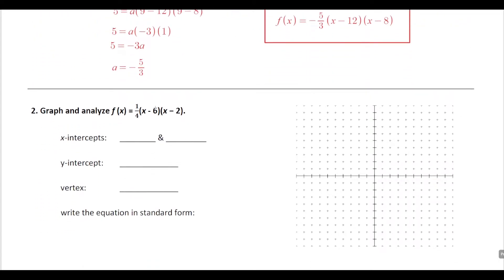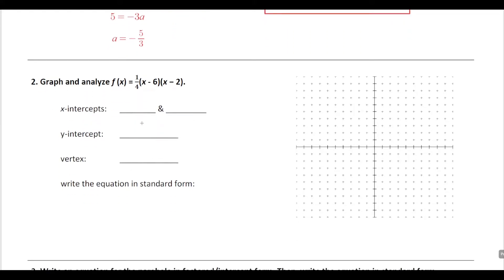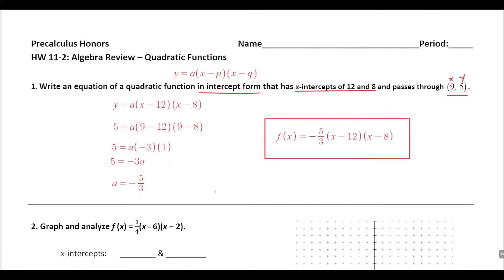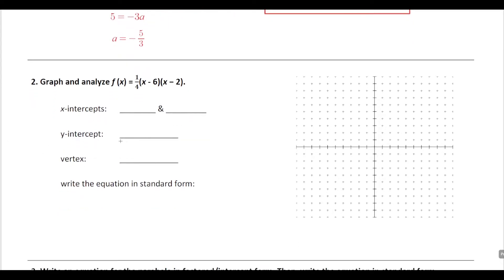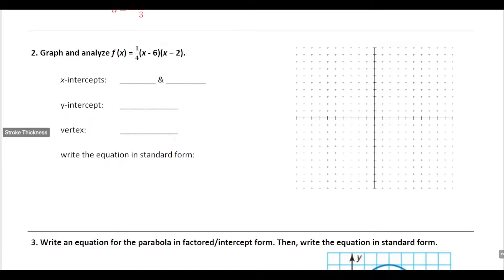Number 2 — you're given a function in intercept form from number 1. Just recall that these two numbers are going to be the x-intercepts, so 6 and 2 are the x-intercepts. Let's go ahead and graph those. We've got one at 6 and another x-intercept at 2. The leading coefficient is positive, so I know it's going to be opening up. I can see that the vertex is going to be on the axis of symmetry right in between these, so it's going to be at x equals 4.